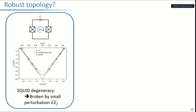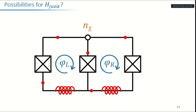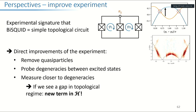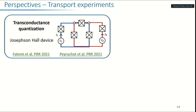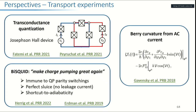It's not as robust because you have some H-junk — inductances, coupling to quasi-particles — and that's something we want to investigate. There's lots to do: more complicated circuits to look at, improving the experiment by removing quasi-particles, and eventually getting transport measurements. But I think spectroscopy is the first step before trying transport on these systems.